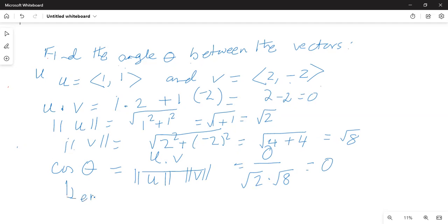Hence, theta is equal to cosine inverse 0, which is equal to pi by 2. So theta, the angle between the two vectors is pi by 2.